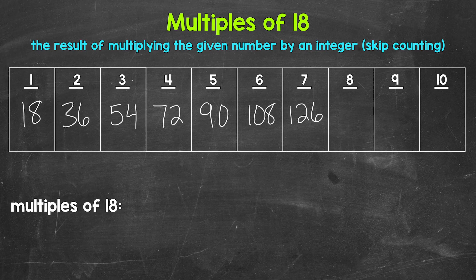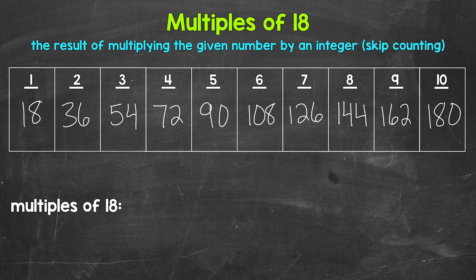8 times 18 is 144. 9 times 18 is 162. And 10 times 18 is 180. Those are the first 10 multiples of 18.